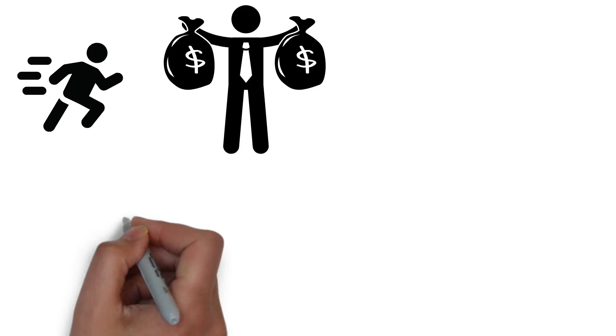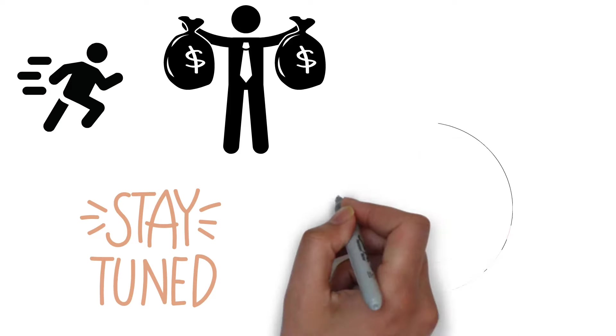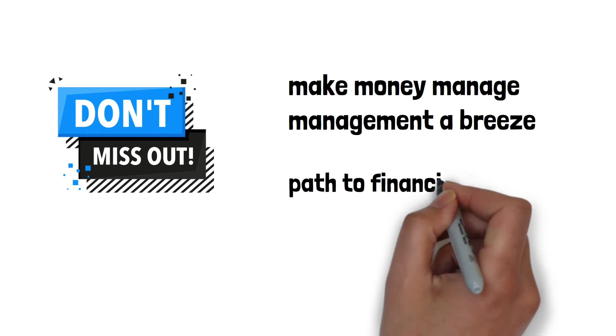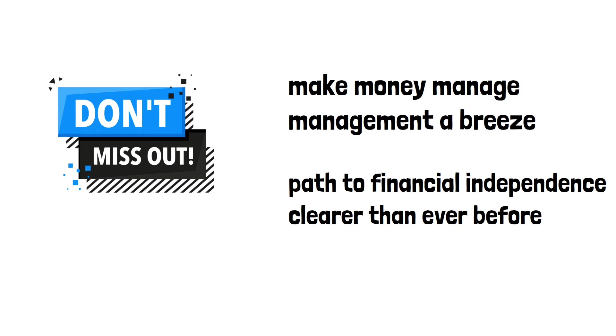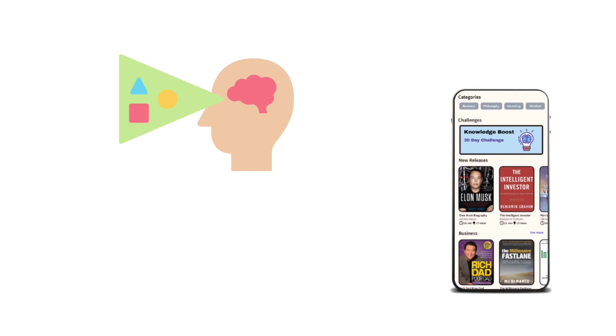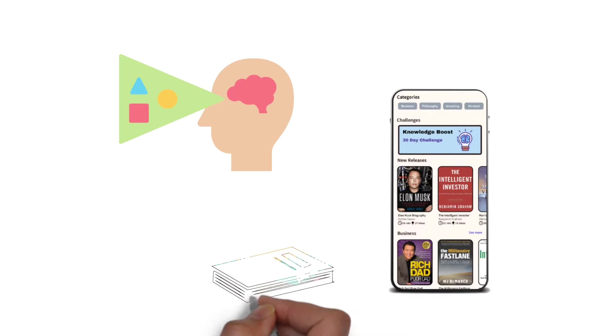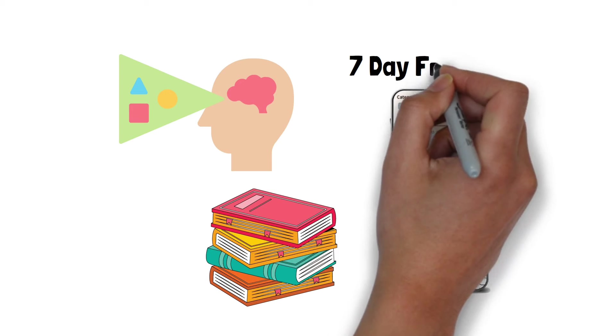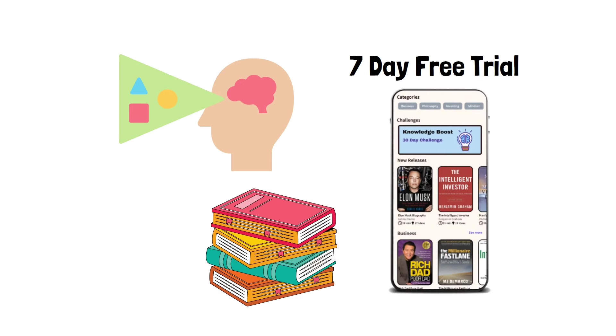Stay tuned to unlock the secrets of The Simple Path to Wealth and empower yourself to take control of your financial destiny. Before we dive into the first idea, if you are a visual learner, you have to check our app, Morphosis. We have animated book summary videos for the best self-development and business books. Click the link in the description to get a 7-day free trial.